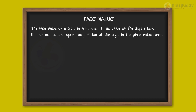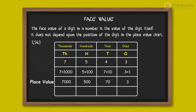So in the number 7543, the face value of digit 7 is 7, the face value of digit 5 is 5, the face value of digit 4 is 4, and the face value of digit 3 is 3.